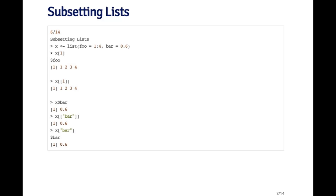If I use the double bracket — x double bracket one — what I get back is just the sequence one through four. The difference here is that in the first example I got a list that contained the sequence one through four, and in the second example I got just the sequence. That's the difference between the single bracket and the double bracket operator.